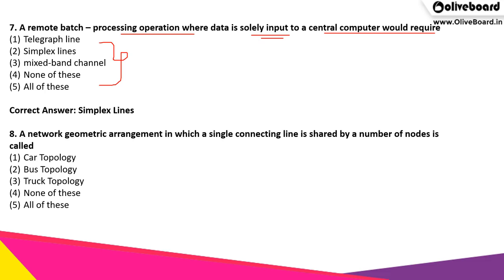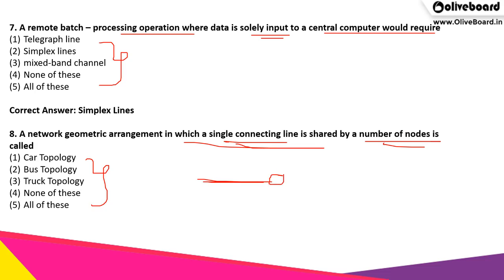The next question: a network geometric arrangement in which a single connecting line is shared by a number of nodes is called what? It is a single connecting line through which various nodes are connected or shared. The correct answer is option 2, bus topology.